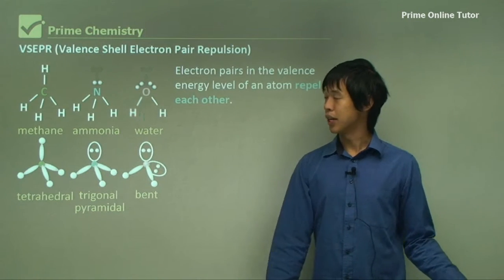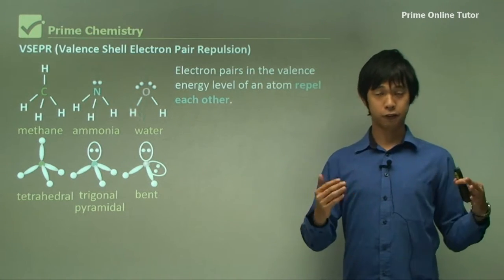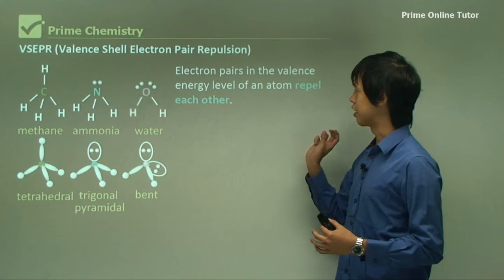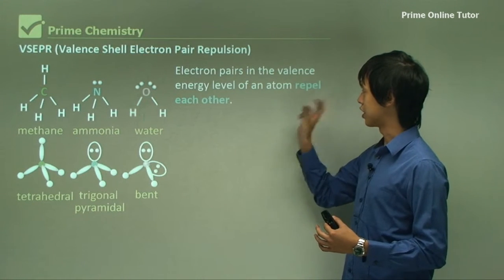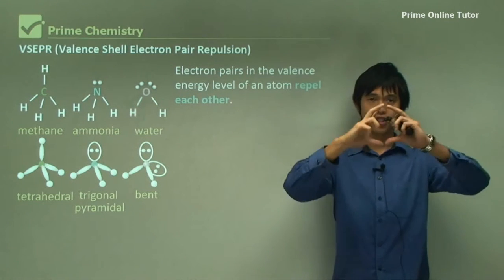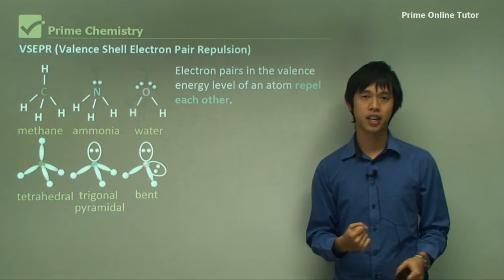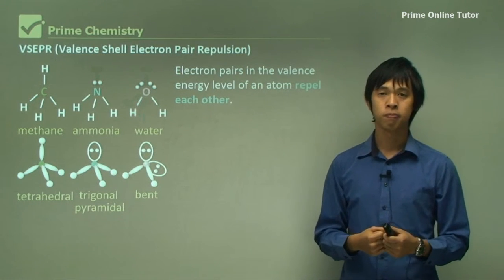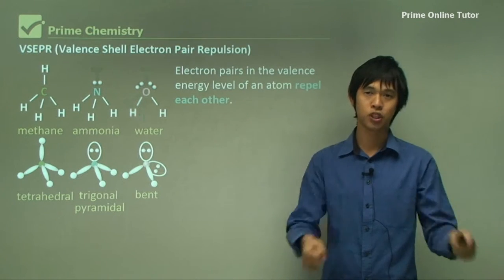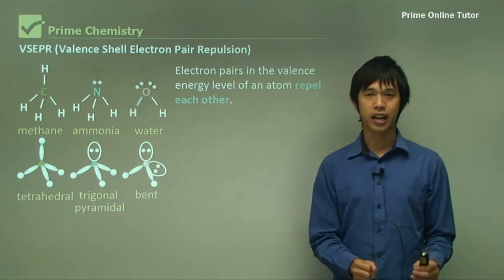So what is VSEPR? If we think on a very basic physics level, electron pairs in the valence energy level of an atom repel each other. So you've got a valence shell like this. There's electrons inside it. They're all negatively charged. What do two things that have the same charge do to each other? They repel each other, just like north and north magnets. They just push each other away. So that's really basic physics. That's all that happens.